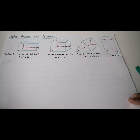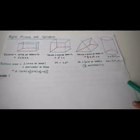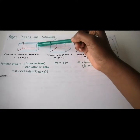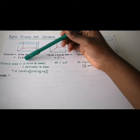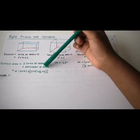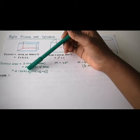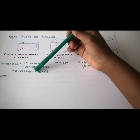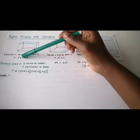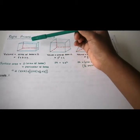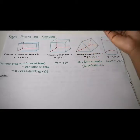Moving on to the area and volume of right prisms and cylinders. For a rectangular prism, the surface area is 2 times the area of the base plus the perimeter of the base, giving 2 times length times breadth plus 2 times length plus 2 times breadth. The volume is length times breadth times height.